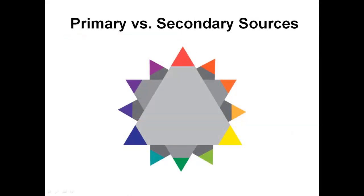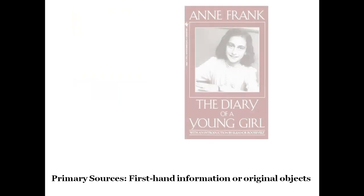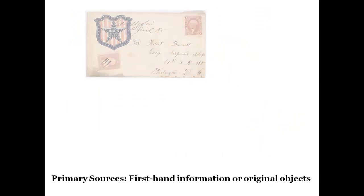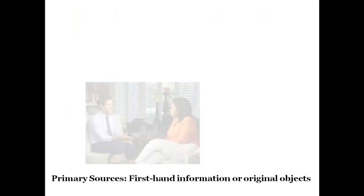Sources of information can be classified into two broad categories, primary and secondary. Primary sources are first-hand information or original objects such as autobiographies, diaries, works of art, photos, letters, historical records and documents, and interviews.